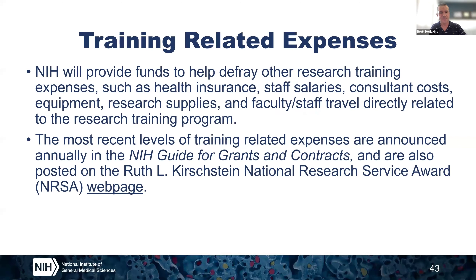Training-related expenses is another category of cost allowed on MSTP applications. Currently, for pre-doctoral trainees, NIH allows up to $4,550 for training-related expenses. If this amount increases in fiscal year 2024, that will also be published in the NIH Guide for Grants and Contracts. A number of things can be covered under this item of cost, including health insurance, staff salaries, consultant costs, supplies, equipment, and anything of that nature. It's worth noting that in the budget justification, the details don't need to be too specific for these direct cost items, because NIH awards a pretty standard formula for each of these cost categories.